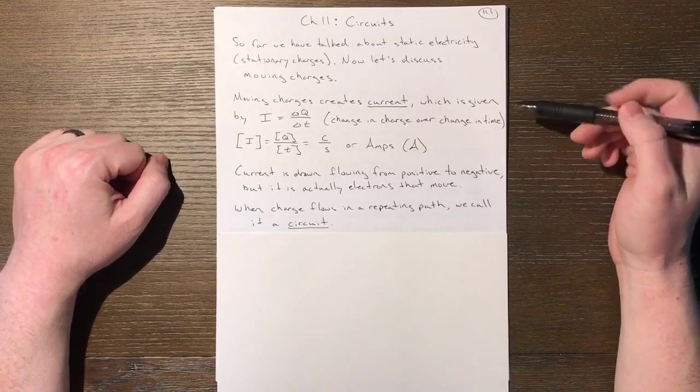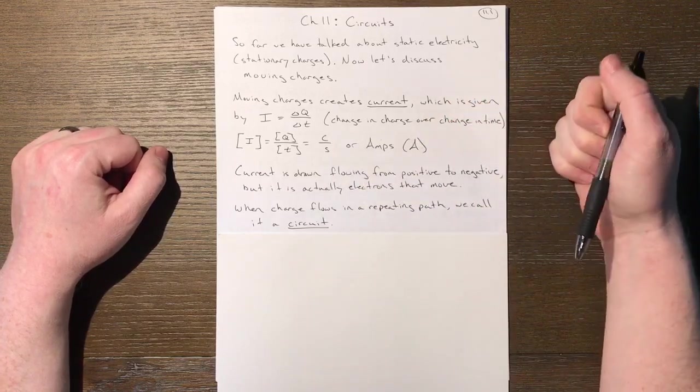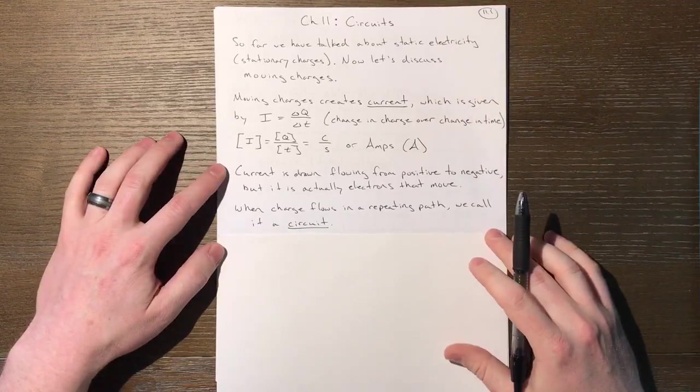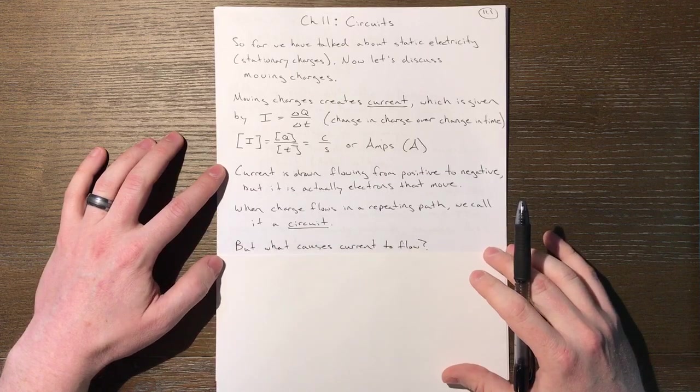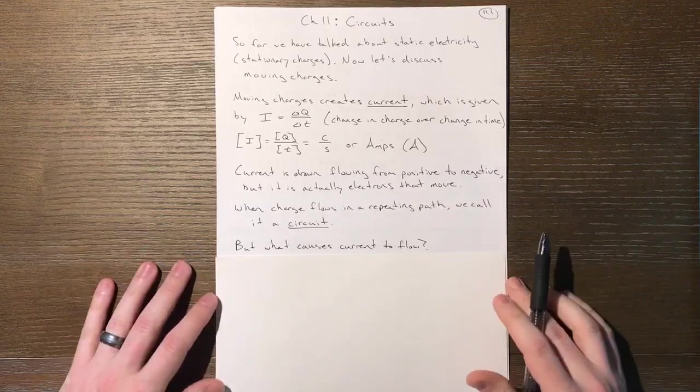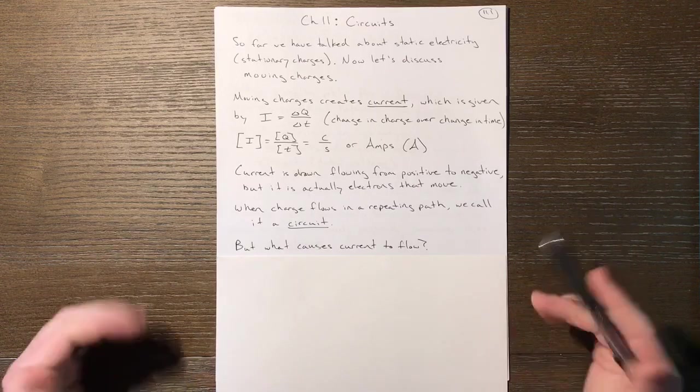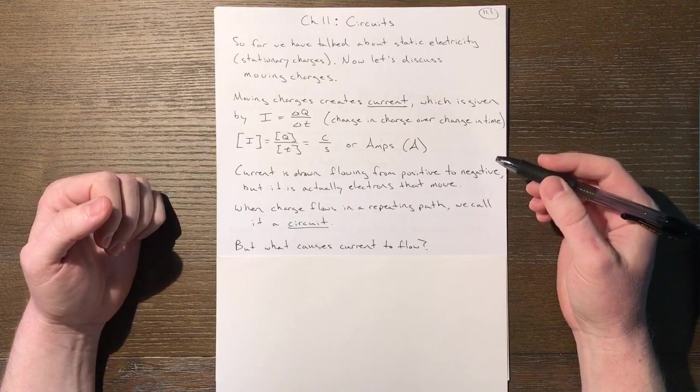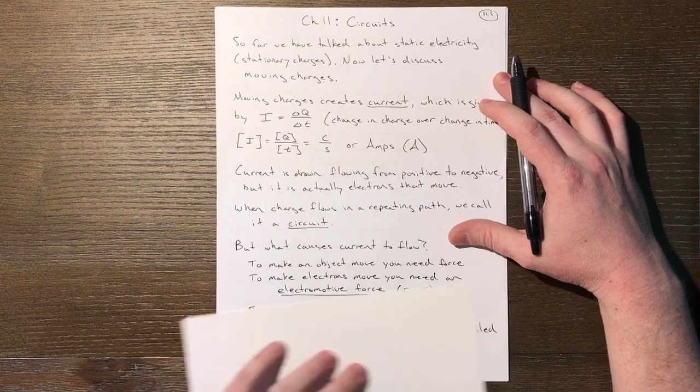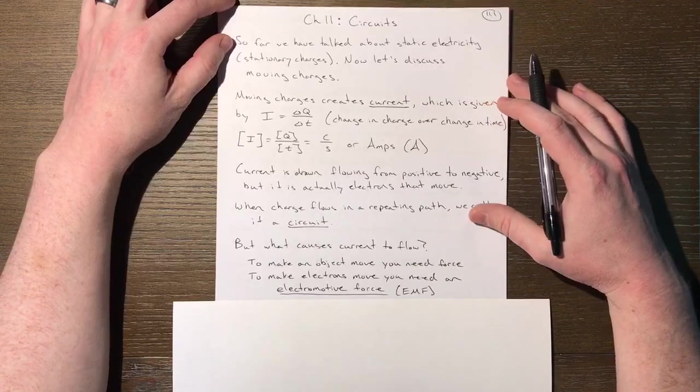Whenever you flow charge in a loop, a repeating path, we call it a circuit. Circuit is a closed loop. You finish where you start and can repeat as many times as you'd like. What actually causes current to flow? To make objects move we needed a force. To make electrons move you need an electromotive force or EMF.